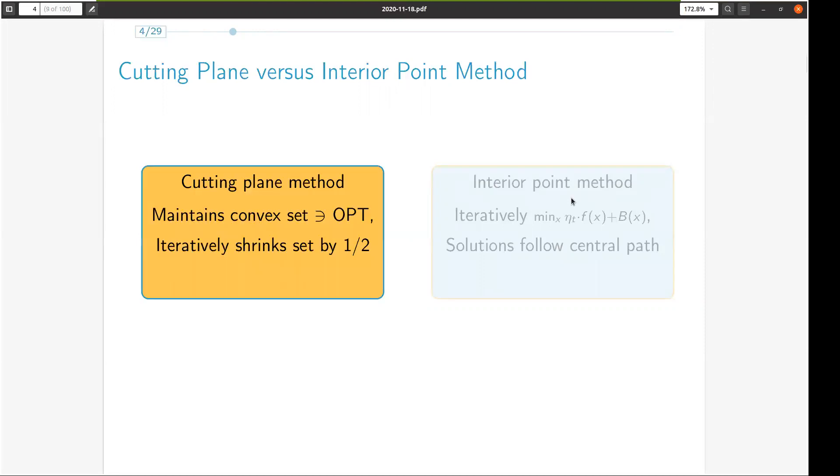One is the cutting plane method, which maintains as invariant a convex set containing the optimum, and in each iteration through querying an oracle shrinks the set by a constant factor. The other method is interior point method. To minimize the objective F subject to some constraint, it encodes the constraint via a barrier function and scales the objective F by a factor eta. In each iteration, the eta is updated appropriately and the resulting problem is solved via the Newton method.